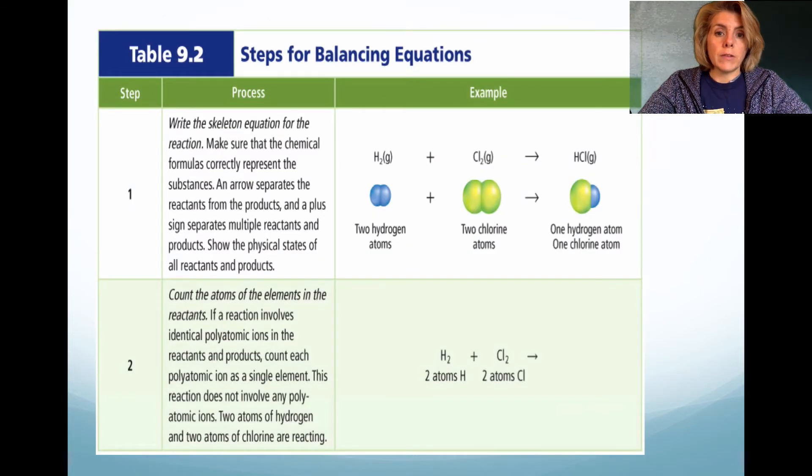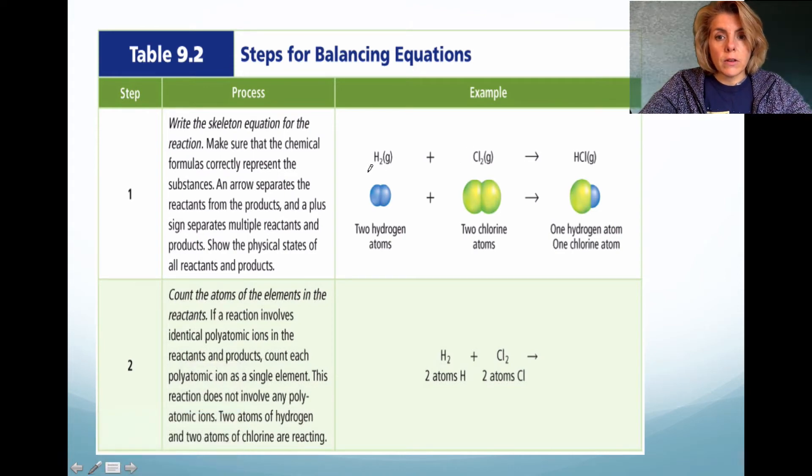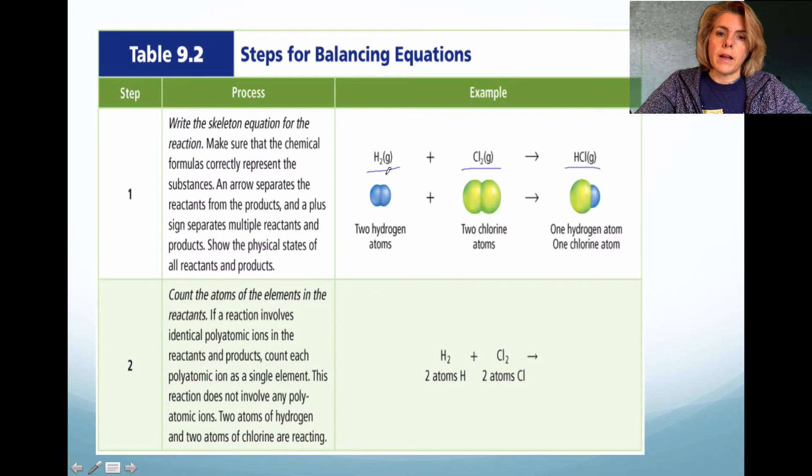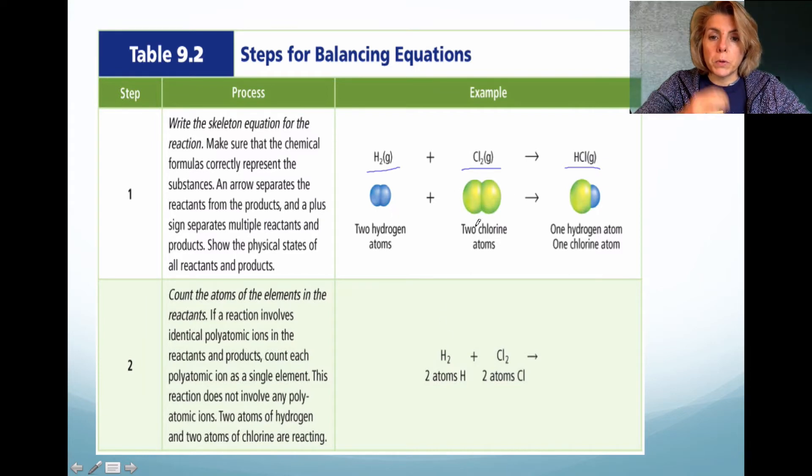So here we have a skeleton, which is hydrogen gas, and that hydrogen gas is being reacted with chlorine gas. And it forms another substance called hydrochloric acid. Now, notice that there is an understood one in front of each of the reactants in the product. But we can actually make sure that this is a balanced equation. And the way we do that is notice that there's two blue spheres here. This represents the hydrogen atoms. And there's two green chlorine atoms. That represents the chlorine. But we only have one chlorine and one hydrogen. This is not a balanced equation. So we have to do something. We have to add a coefficient.